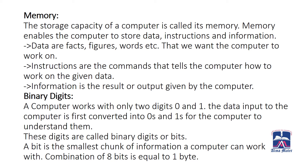Now, memory. The storage capacity of a computer is called its memory. Memory enables the computer to store data, instructions and information. Data are facts, figures, words, etc. that we want the computer to work on. Instructions are the commands that tell the computer how to work on the given data. Information is the result or output given by the computer.